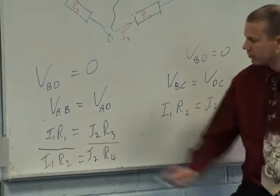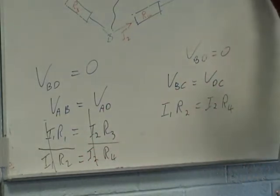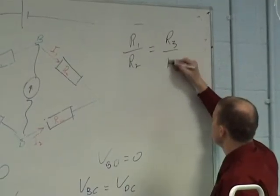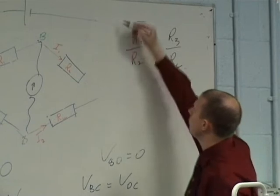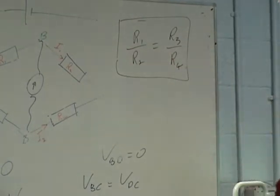The same thing on both sides. And now these guys cancel, these guys cancel, and I'm left with r1 over r2 equals r3 over r4.